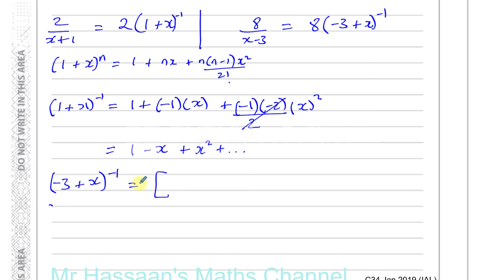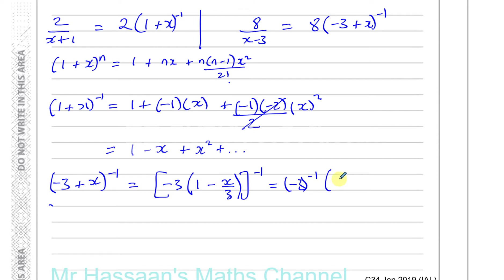I'm taking out a minus 3 from the bracket — it must become plus 1 inside. If I take minus 3 out, I get -3 times 1, which gives -3. I must also take it out from the x term, giving minus x divided by 3, because minus times minus is plus and 3 × (x/3) gives x. So this becomes (-3)^(-1) times (1 - x/3)^(-1), and (-3)^(-1) equals minus one third.